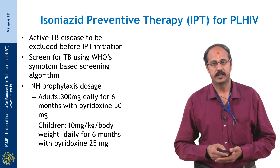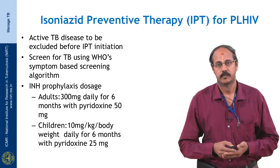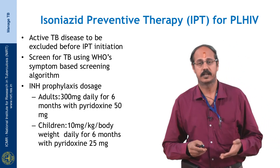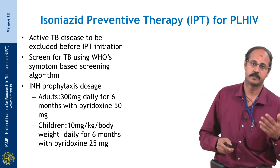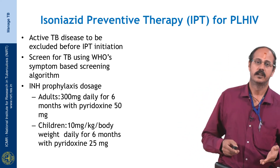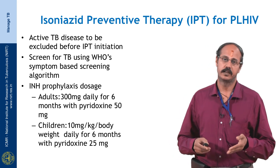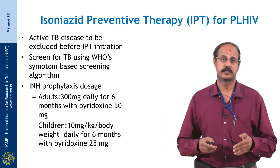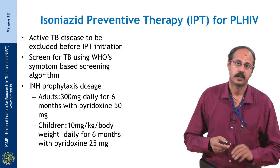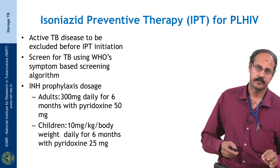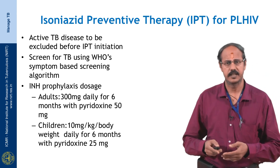Regarding isoniazid preventive therapy, both the Temprano trial and REMEMBER trial have shown that isoniazid preventive therapy is superior to empirical TB therapy and has greatly reduced TB breakdown. Our trial at NIRT found that INH resistance in patients who later develop TB is very minimal, paralleling findings from other studies.